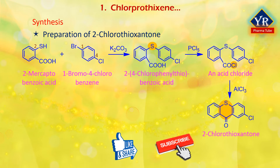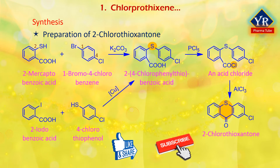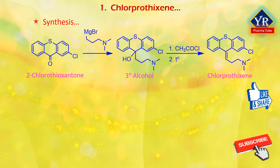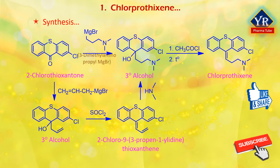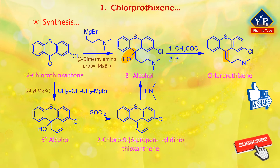An alternative way of making 2-chlorothioxanthone is by reacting 2-iodobenzoic acid with 4-chlorothiophenol to make 2-(4-chloro-phenylthio)benzoic acid. The resulting 2-chlorothioxanthone is reacted as a carbonyl component with either 3-dimethylaminopropylmagnesium bromide or allylmagnesium bromide giving the corresponding tertiary alcohol. Dehydration of the first is accomplished by acylation of the tertiary hydroxyl group using acetyl chloride and subsequent pyrolysis of the formed acetate, which leads to the desired chlorprothixene.